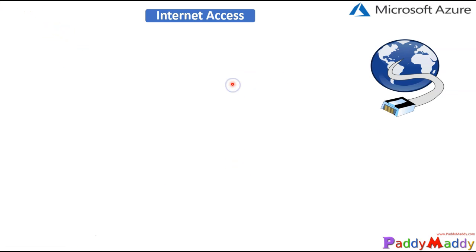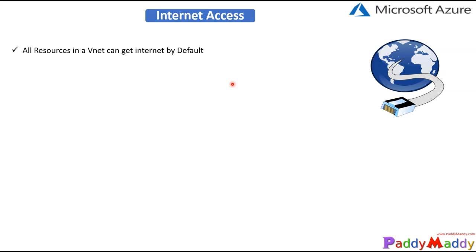By default, for all the VMs, the virtual networks that you create will have internet access. That means you're open to have internet connectivity for your Azure VMs or Azure resources.